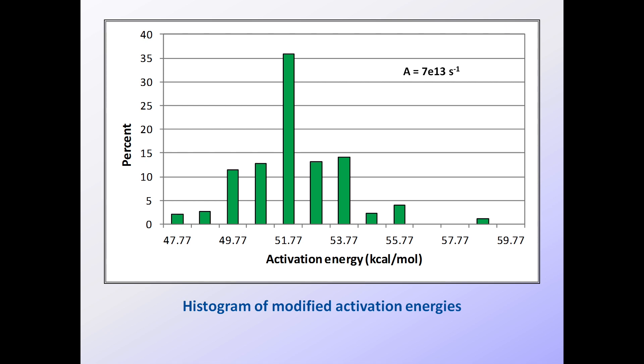Thus, a change from A equals 1E14 to 8E14 would result in an increase in each activation energy of about 3.09 kilocalories per mole. A change in A of an order of magnitude will result in the change in EA of about 3.42 kilocalories per mole.